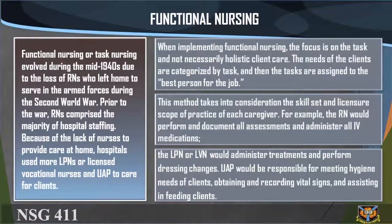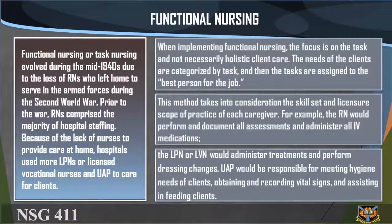Functional nursing, or task nursing, evolved during the mid-1940s due to the loss of RNs who left home to serve in the armed forces during the Second World War. Prior to the war, RNs comprised the majority of hospital staffing. Because of the lack of nurses to provide care at home, hospitals used more LPNs or licensed vocational nurses and UAP to care for clients. When implementing functional nursing, the focus is on the task and not necessarily holistic client care. The needs of the clients are categorized by task and then the tasks are assigned to the best person for the job.